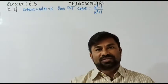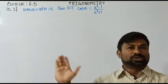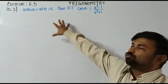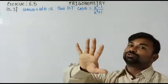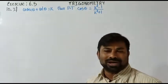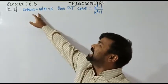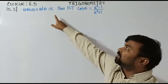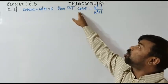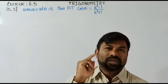Hello everyone, myself Maruti. Welcome to this math video session. In this video I have chosen a sum from trigonometry — a very important one. If cosecant theta plus cot theta is equal to k, we need to prove that cos theta is equal to k squared minus 1 by k squared plus 1.